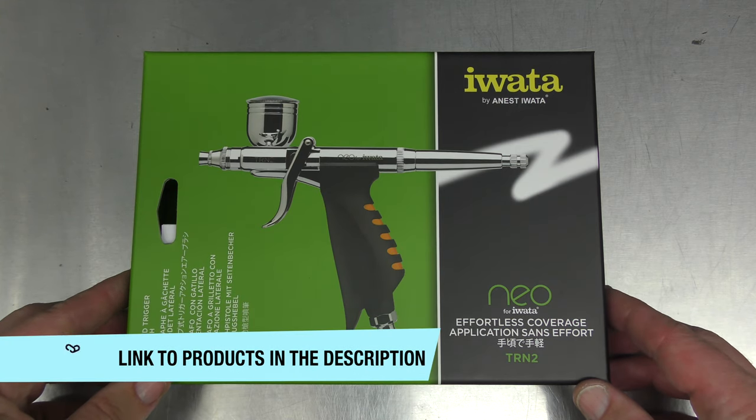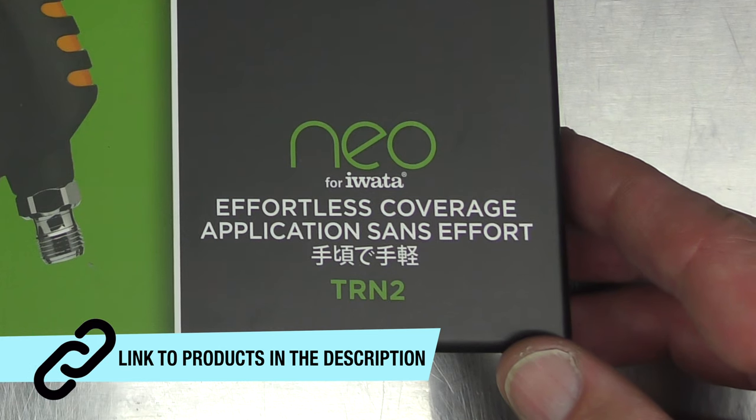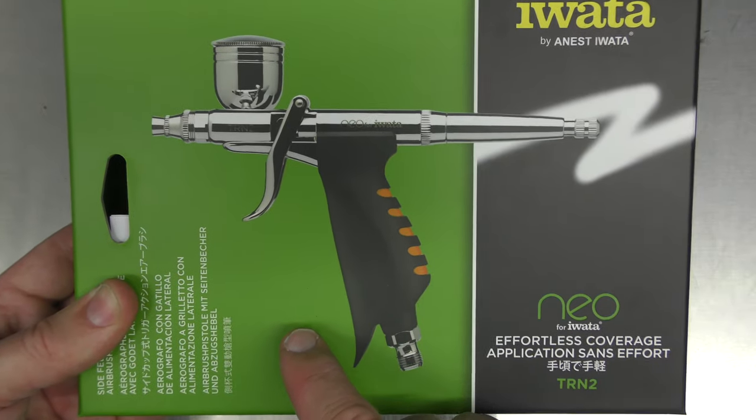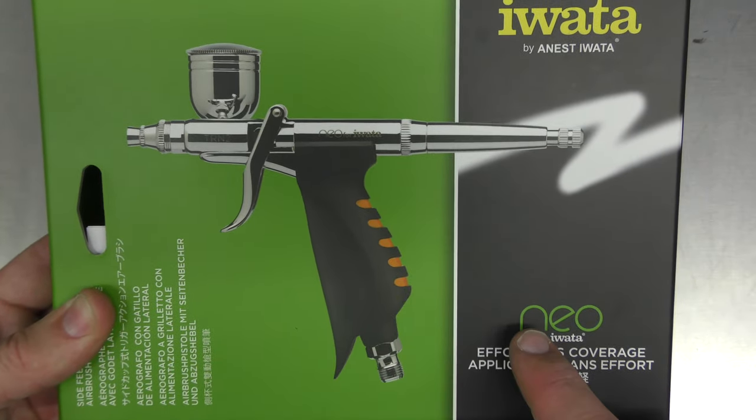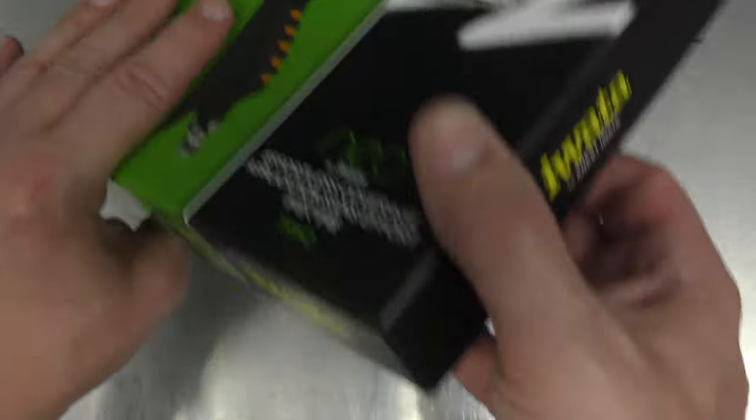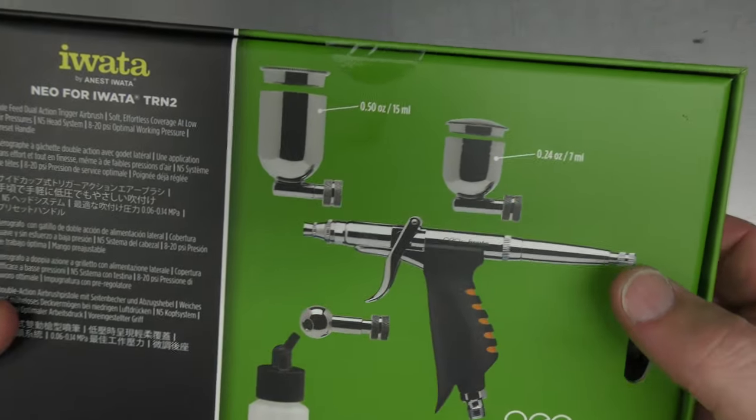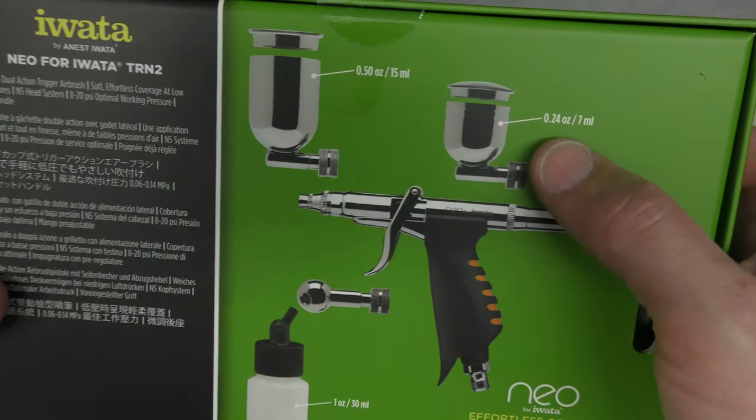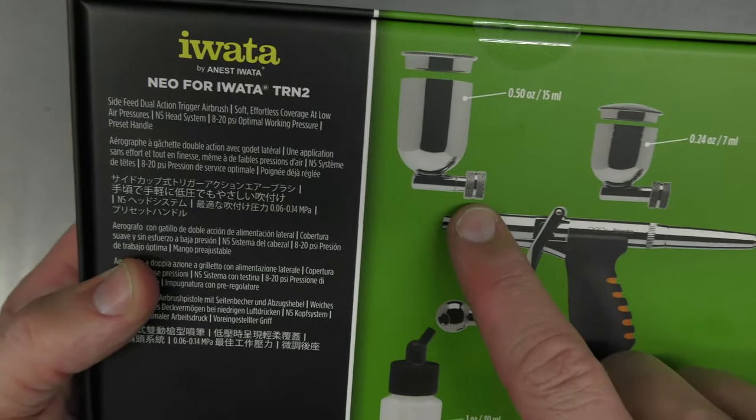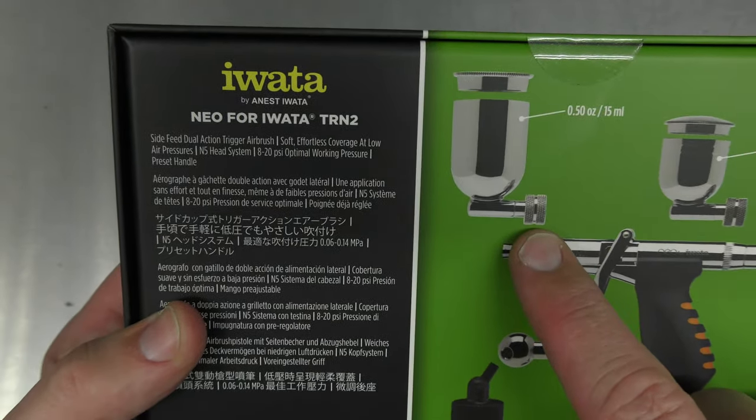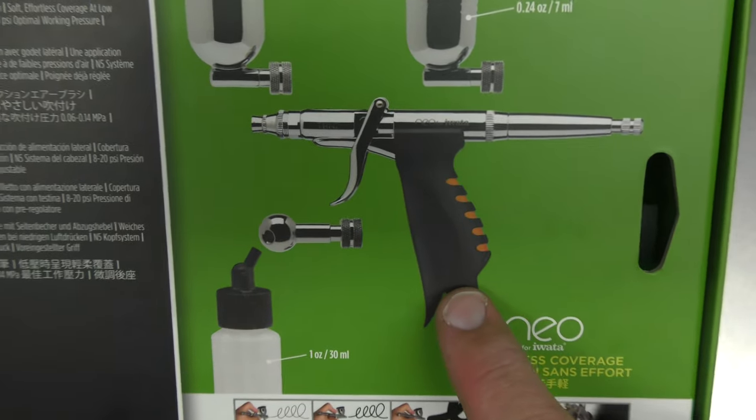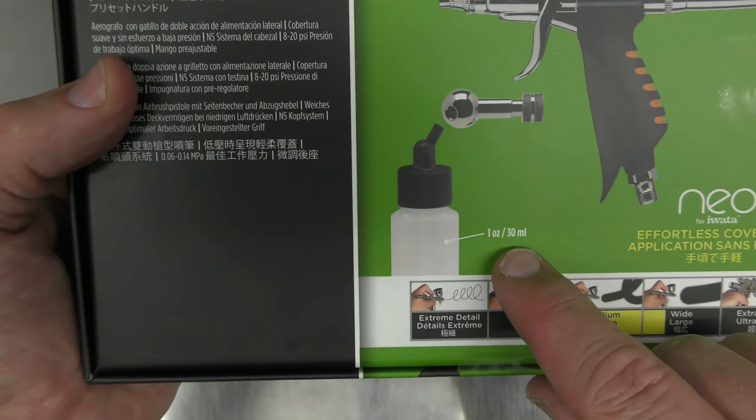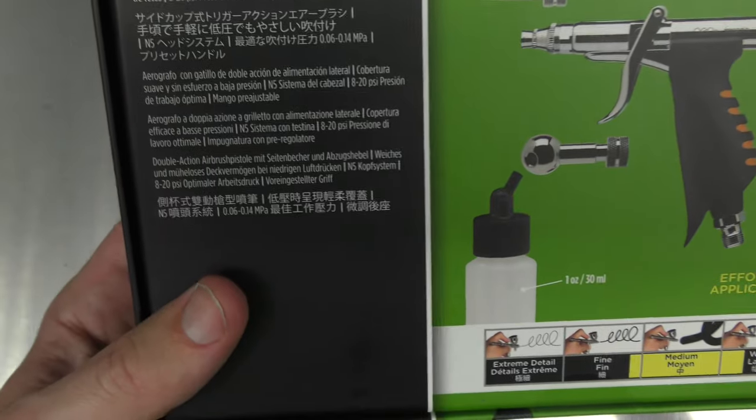So this is the HP TRN2 Neo for Iwata. We're going to look at what's inside the box. You can see it's got this green which is a way that you can identify any of the Neo for Iwata products. On the back of the box you can see this one comes with a 7ml side feed color cup which is 0.24 ounces, or a larger one at 15ml or 0.50 ounces. It's a trigger style brush and it looks like you've got an adapter to hook up a bottle, and that's a 30ml bottle or one ounce. Pretty good that you get the whole lot.